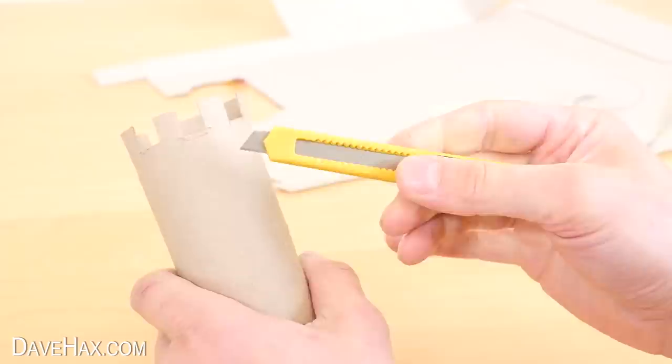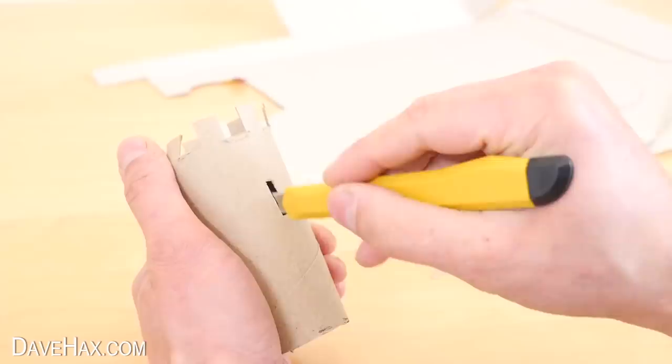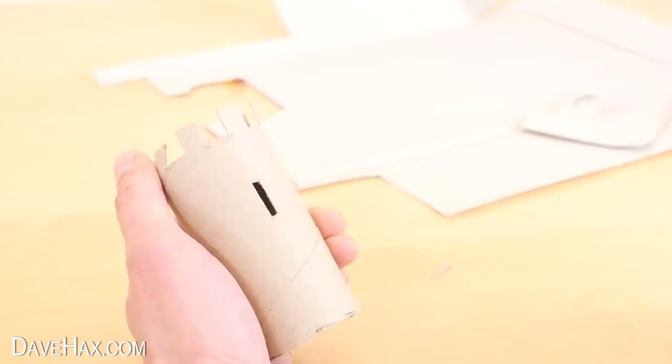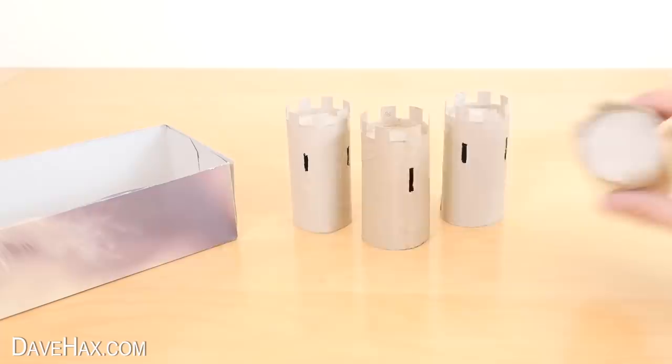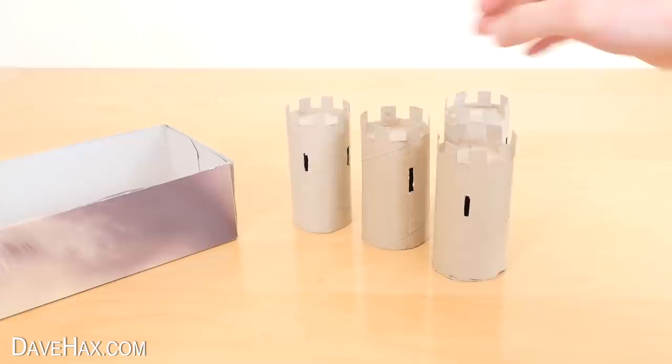And finally I'm using a sharp knife to carefully cut an arrow slit window in the side. We want to make four of these in total. I've cut two arrow slits in the turrets for the front of the castle. And we can now fit them to the tissue box.